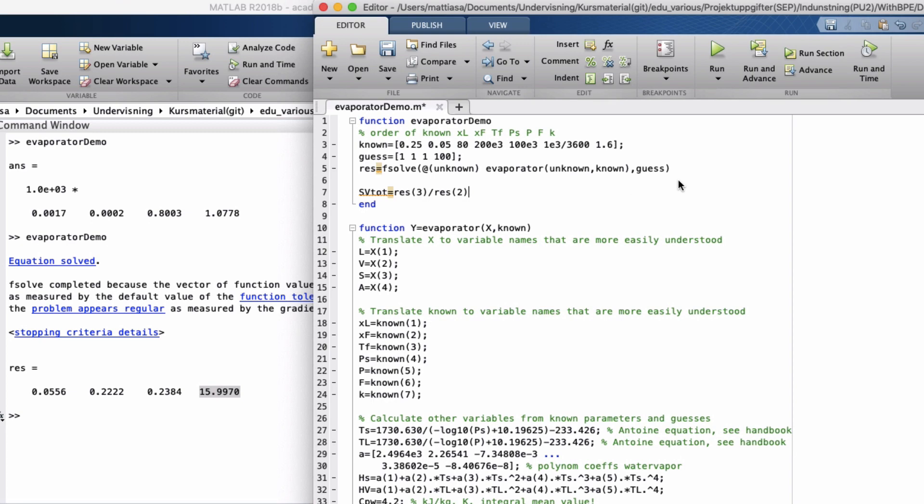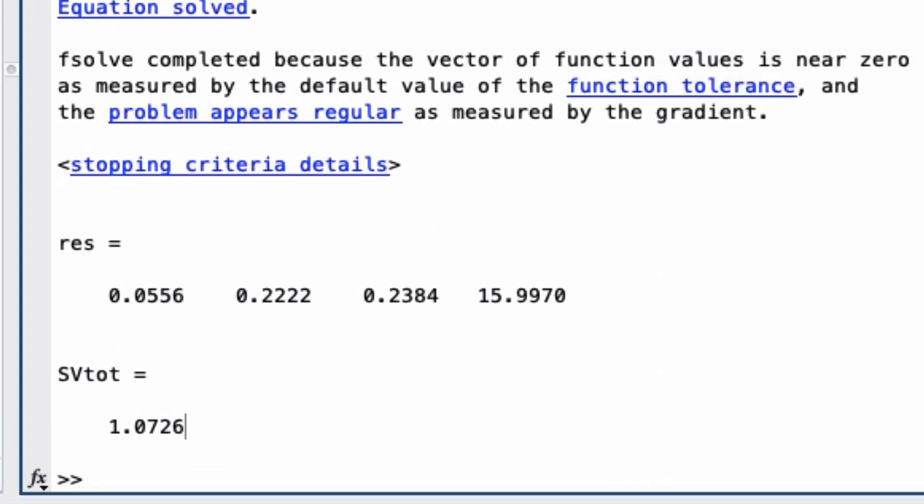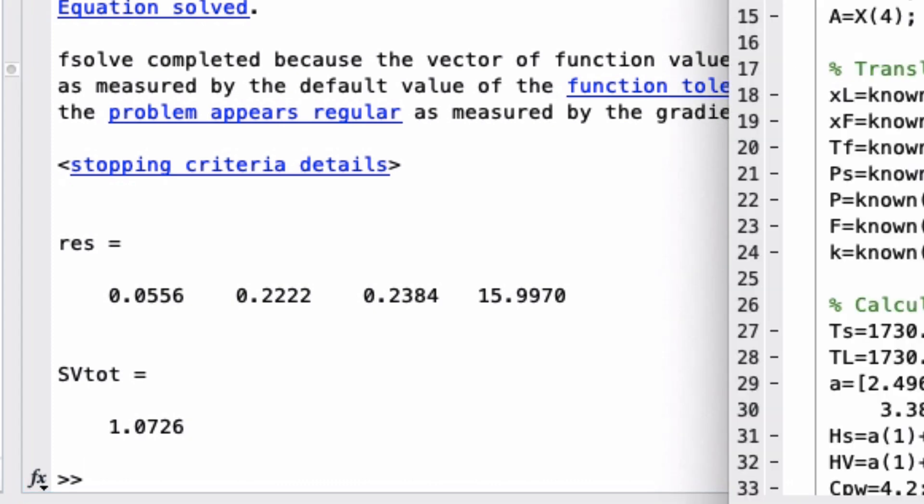So we divide one with the other and we run the code and we get this value here. This means that we have a well functioning evaporator. The vapor flow v is almost as big as the steam flow.